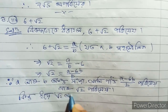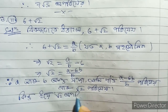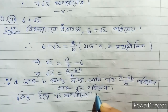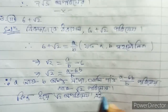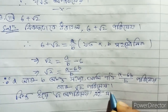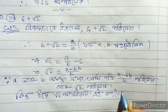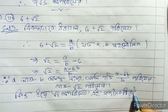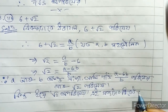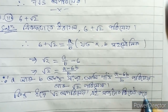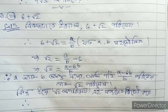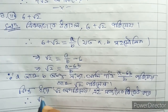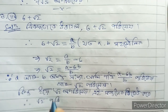Root 2 is irrational. This is a contradiction, therefore root 2 cannot be expressed as a rational number in this form, so 6 plus root 2 is irrational.